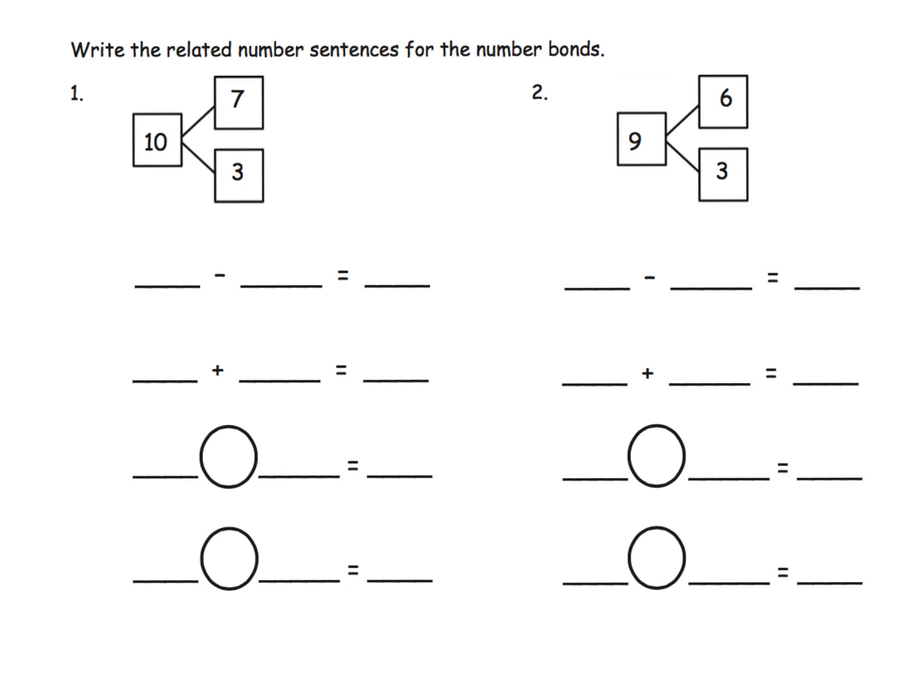So this happens to be from the exit ticket. I'm kind of veering from my normal practice of choosing problems from the homework because the homework is a little different, as you'll see in a minute. But basically in this exit ticket we see we're given a number bond, and our task is to create all of the number sentences that go with that number bond. I'm a little bummed that they tell you that you have to do the subtraction first and then the addition.